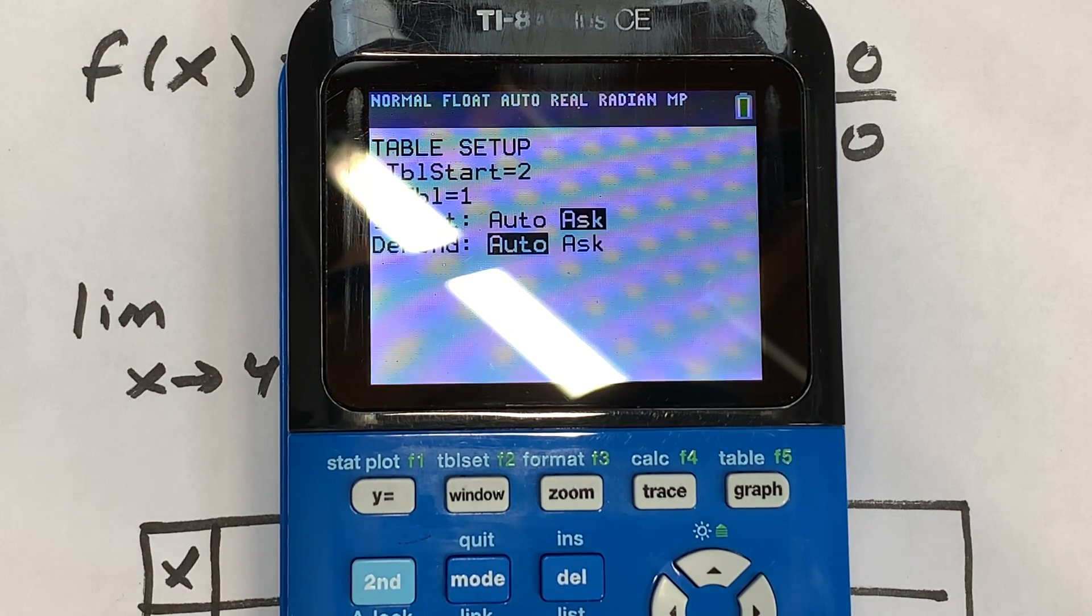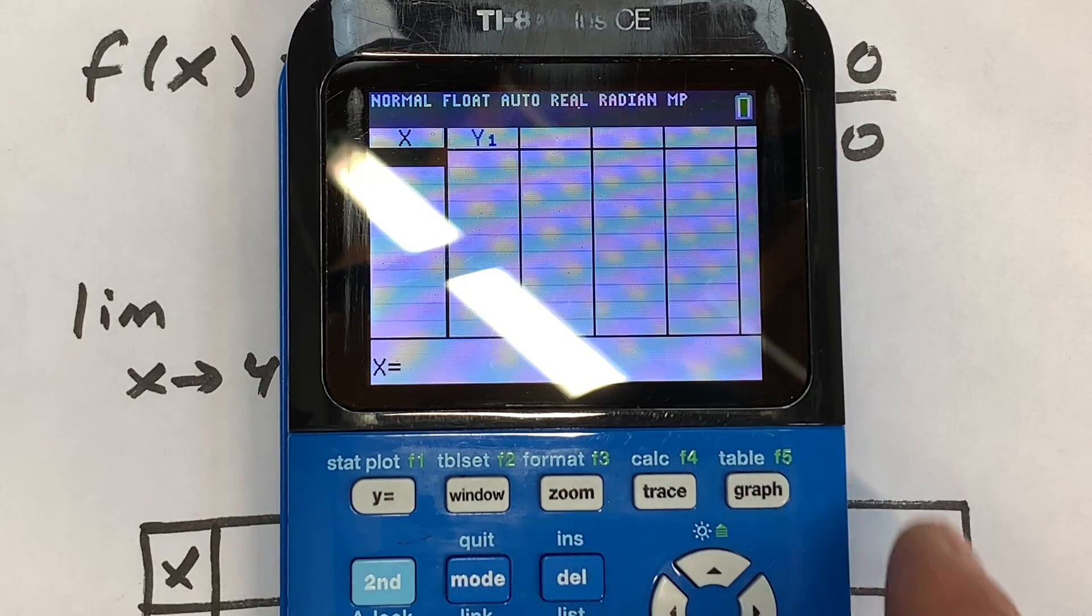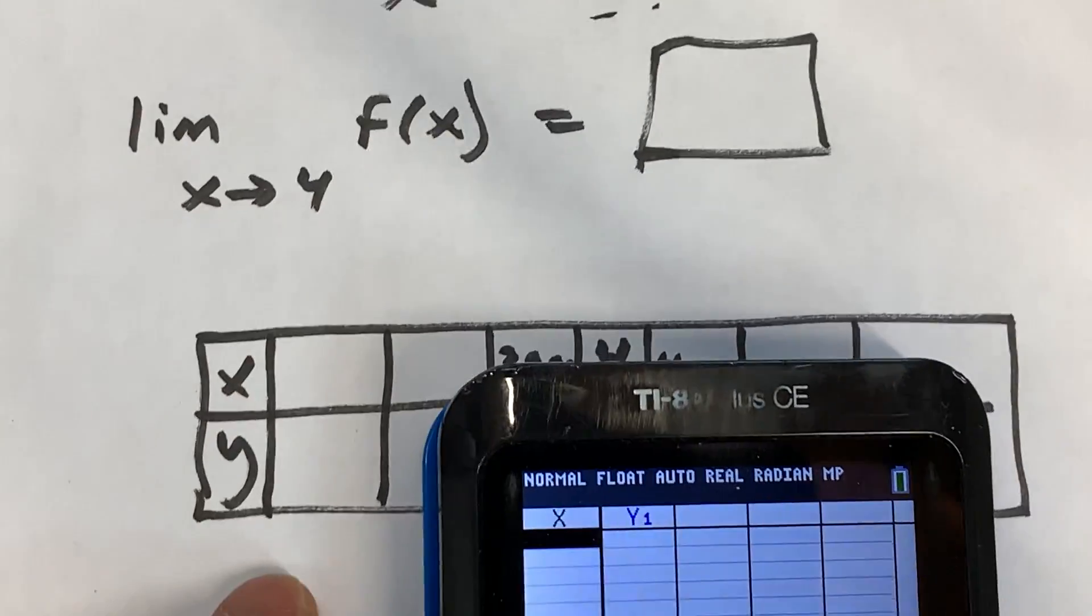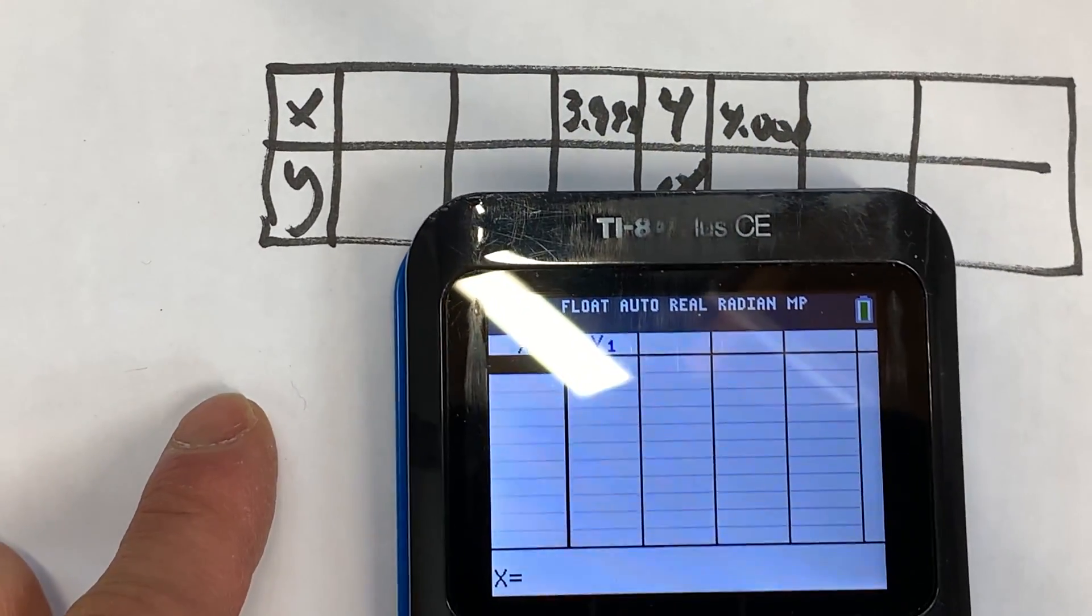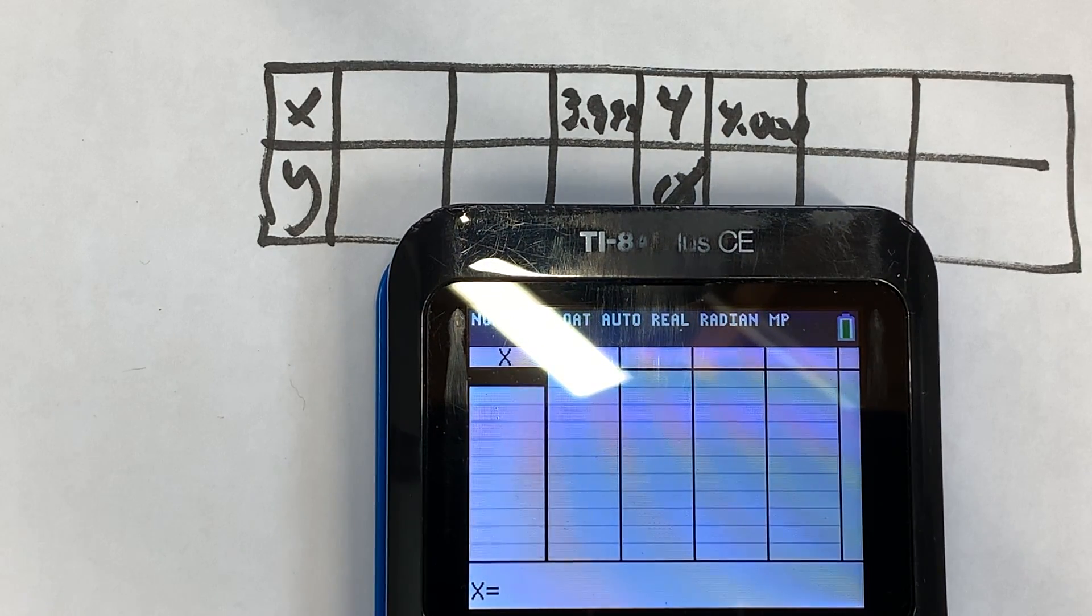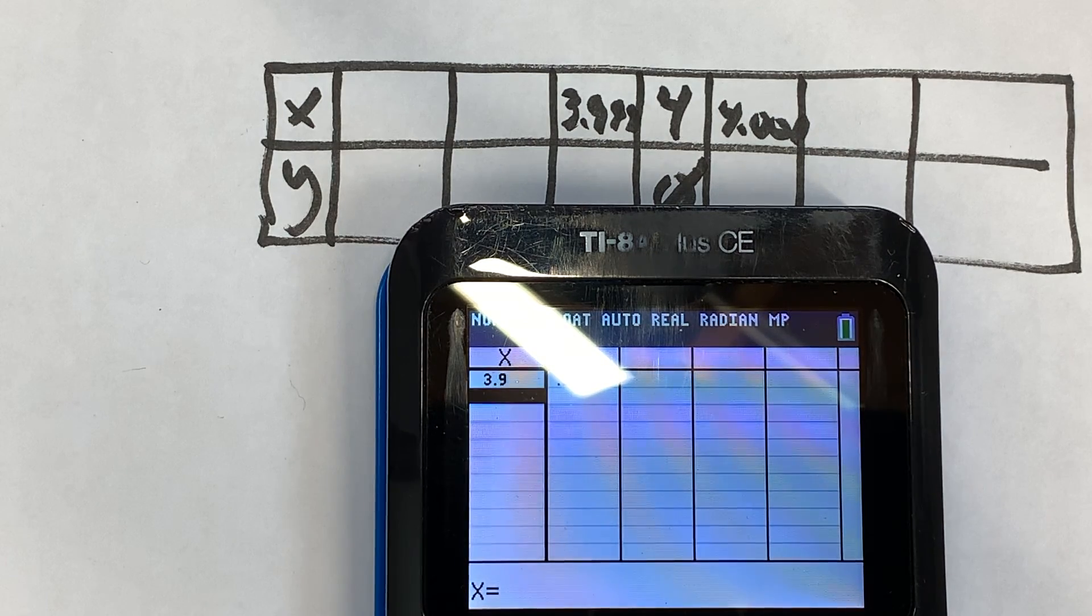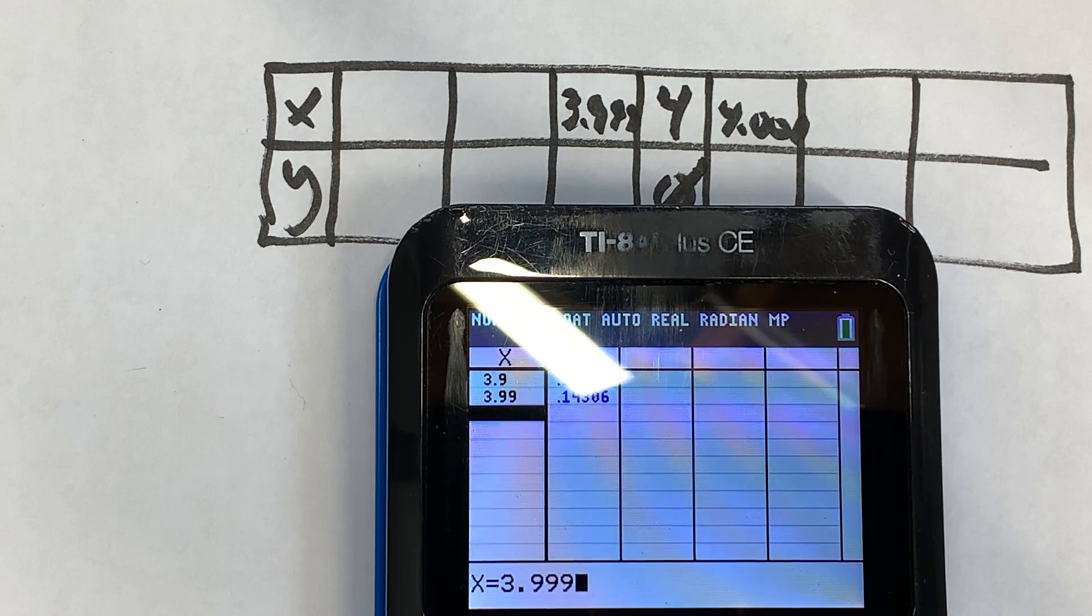We're going to go now to 2nd, Table, which is right above Graph. And we're going to put in these values that we were talking about earlier. So we want to put some that are a little bit below four and a little bit above four. So I'm going to put 3.9, and I'm going to do 3.99 and 3.999, so you can see I'm almost to four.